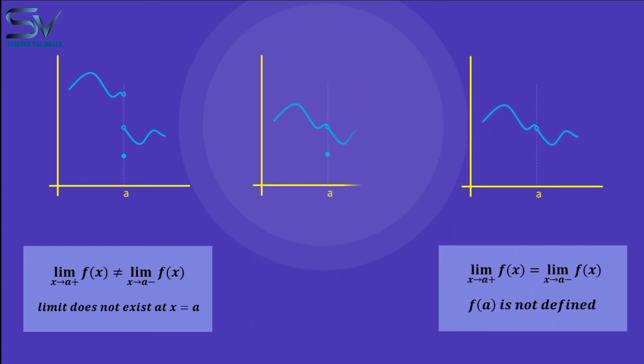Consider the third example. At this point, the left and right limits are equal, indicating that the function's limit exists. The function's value, on the other hand, is also defined.